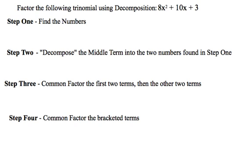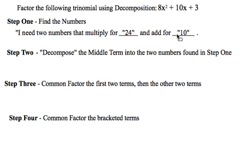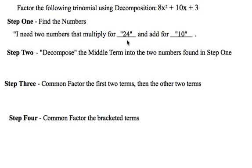And you'll recognize them as steps 1, 2, 3, and 4 here. So if I wish to factor by decomposition 8x squared plus 10x plus 3, my first step is to find the numbers. So I use my sentence: I need two numbers that multiply for 24 and add for 10.